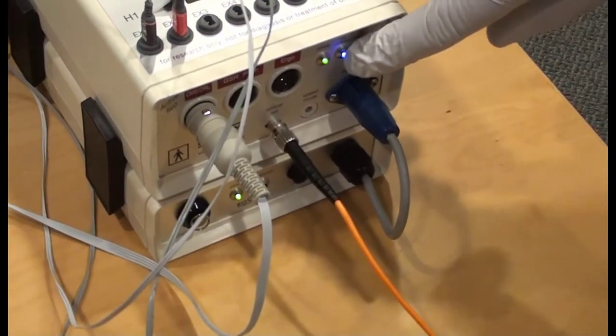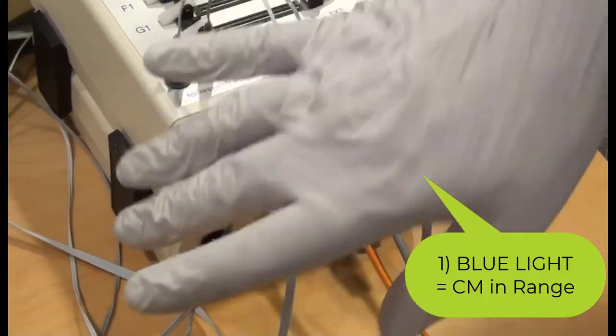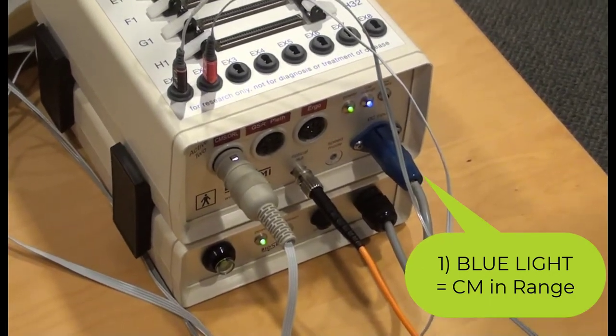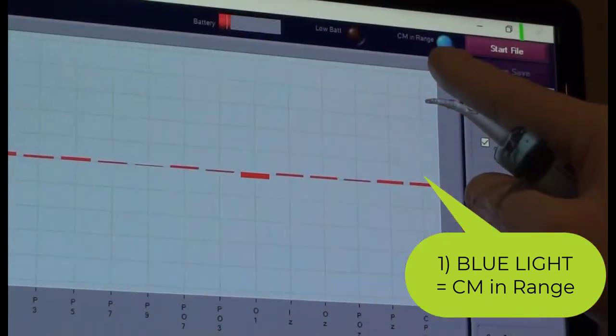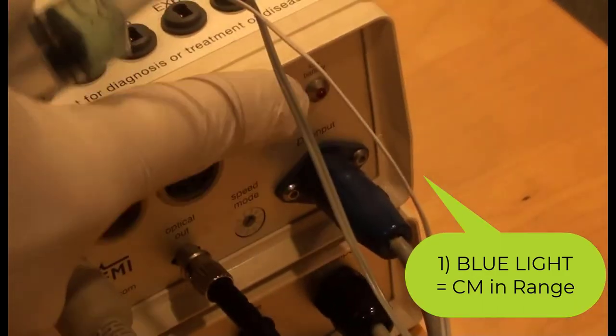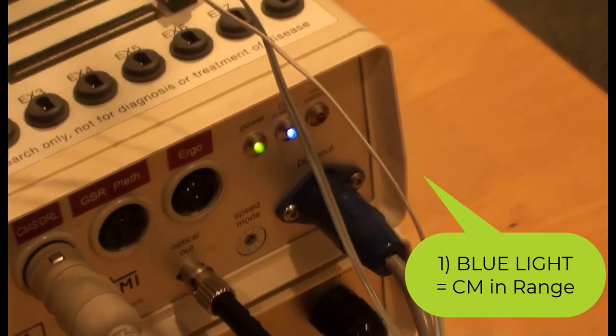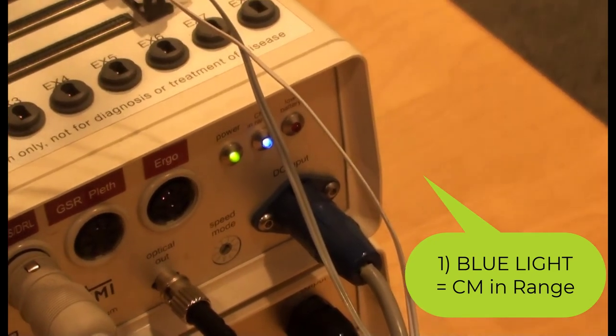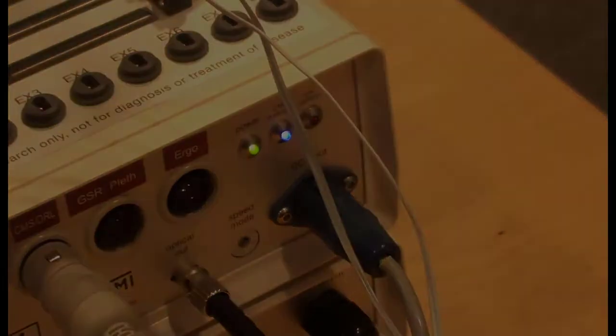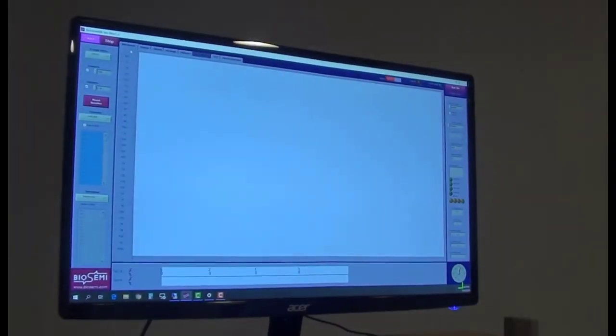When you connect CMS DRL and the AD box power is on, the blue CM in range light on the front panel should illuminate if there is a good contact at these electrode sites and there are no other faults. Be aware that the blue dot on the top right side of the ActiveView screen reflects the state of the blue CM in range light on the front panel of the AD box. Even if your data acquisition computer is in another room, you will always know the state of the blue light, even if you cannot see the AD box front panel.